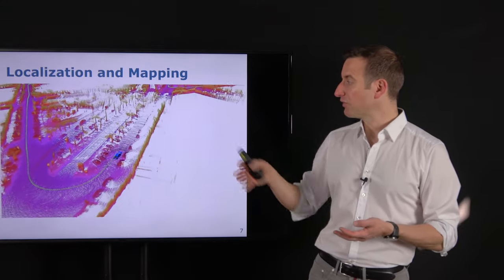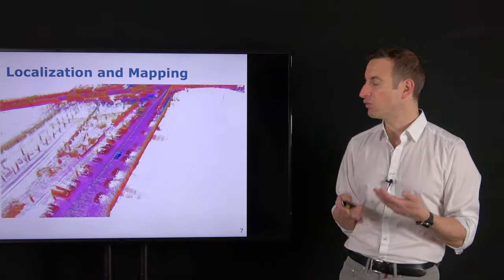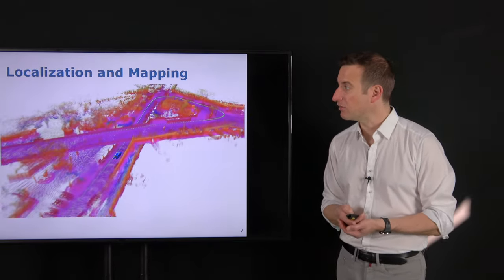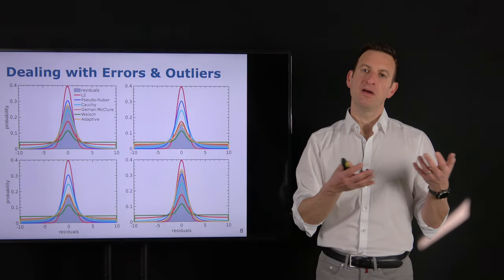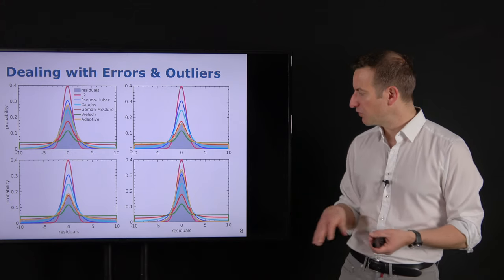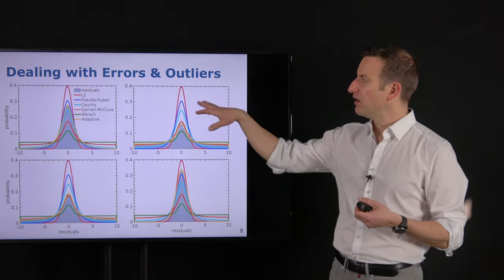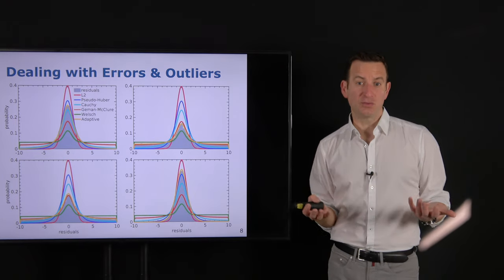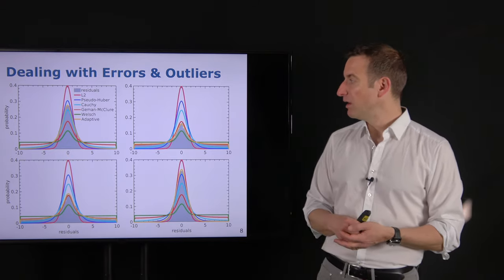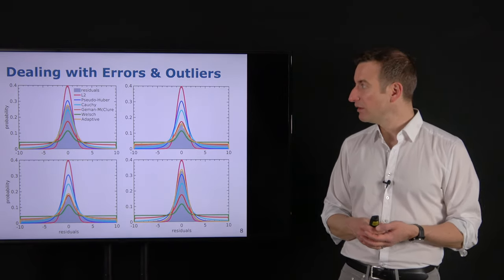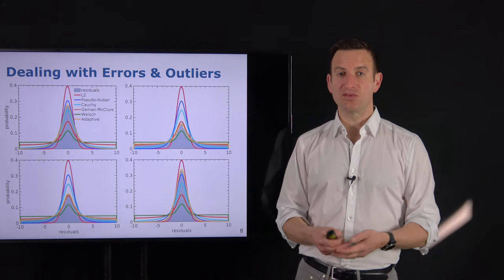Whenever you do point cloud registration or solve the SLAM problem, you deal with outlier points — wrong or incorrect data associations. We'll look briefly into robust optimization from a practical perspective: different residual distributions, which robust kernels to use, how strongly to down-weight outliers, and adaptive techniques to adjust kernel functions or robust estimators for a system robust to sensor noise and outliers in data association.